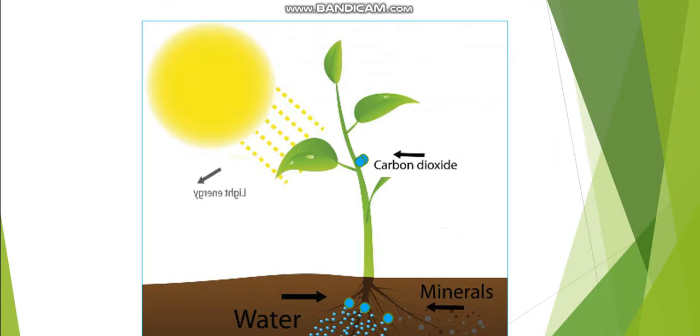The leaves absorb energy from sunlight. The plant uses the energy of sunlight to turn water and carbon dioxide into sugar and oxygen. The plant uses the sugar for growth.